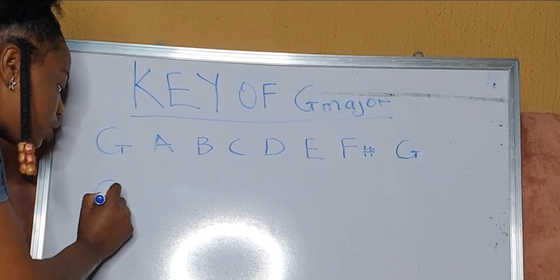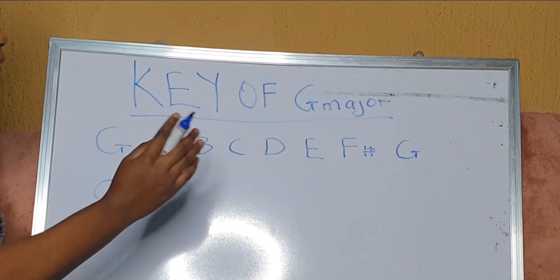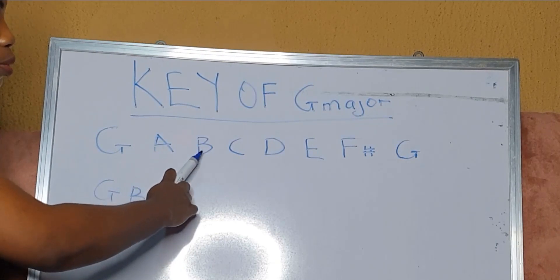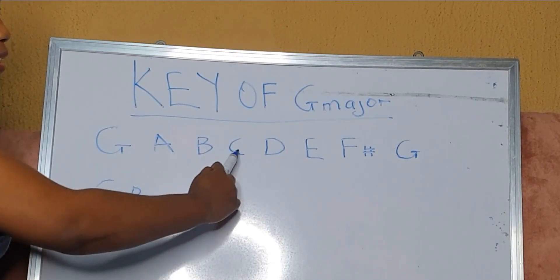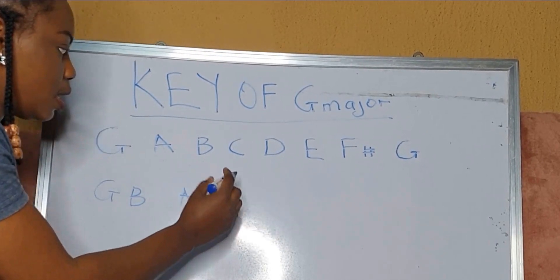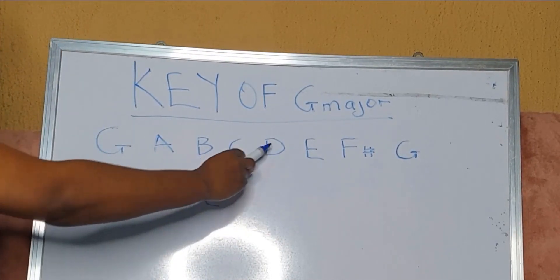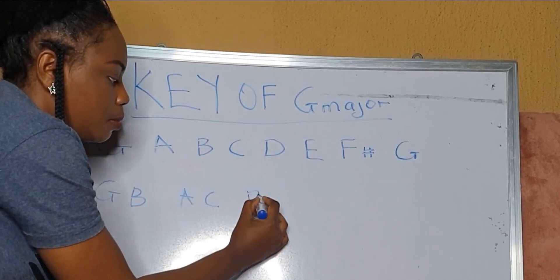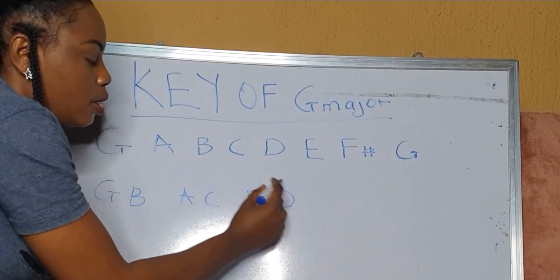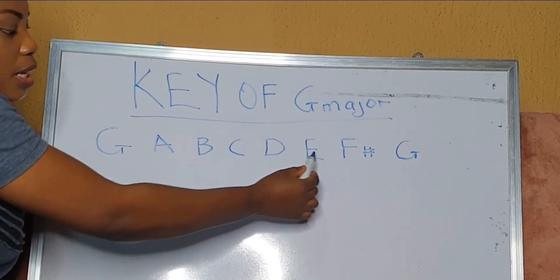So you have G and B. Going further, you have A — one, two, three — so A and C. Then B — one, two, three — B and D. And C — one, two, three — C and E.